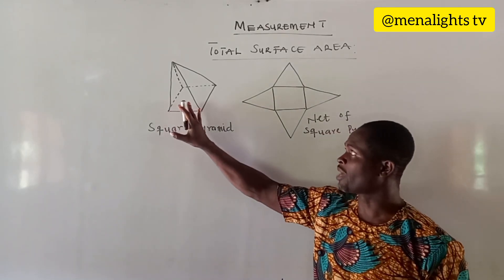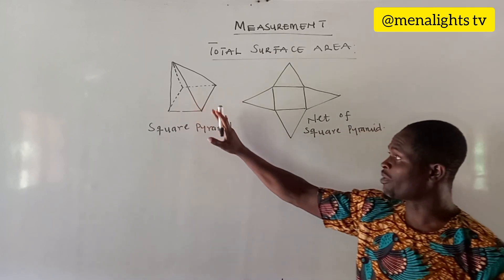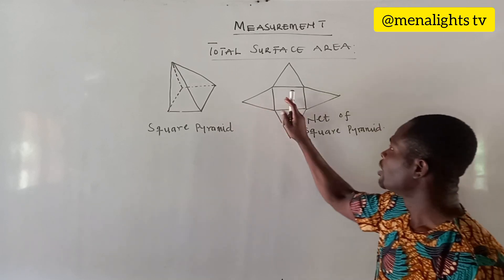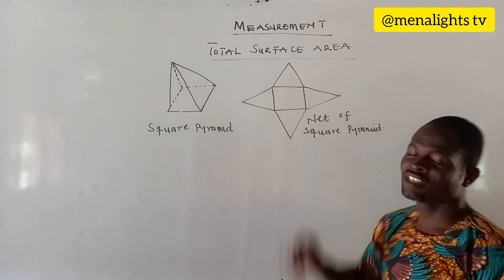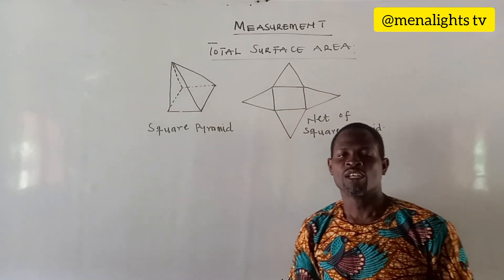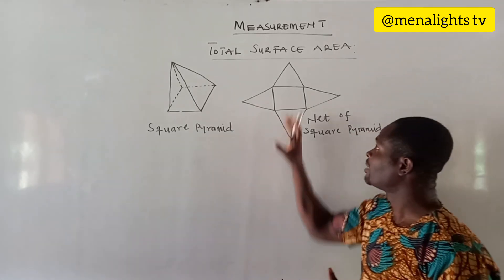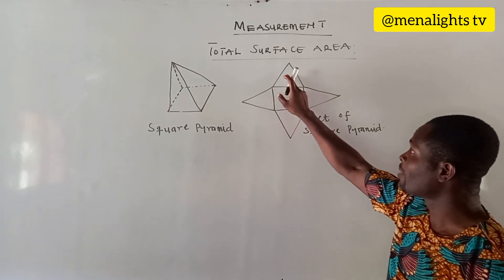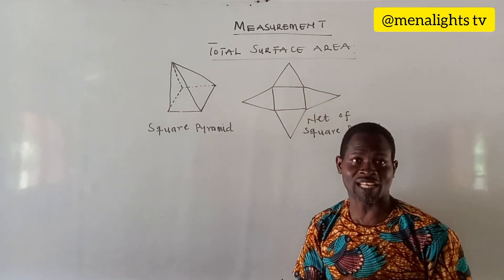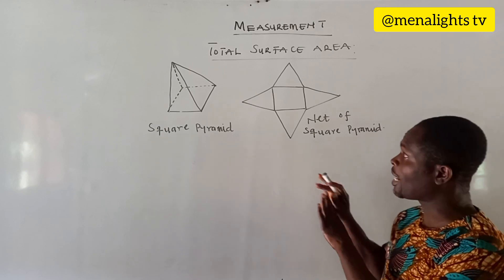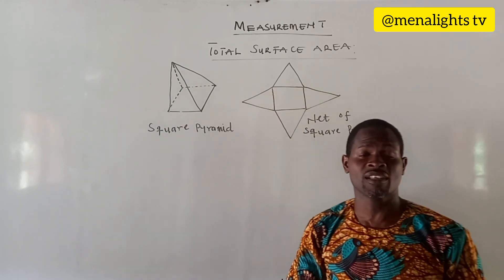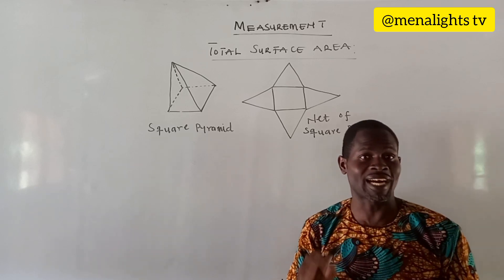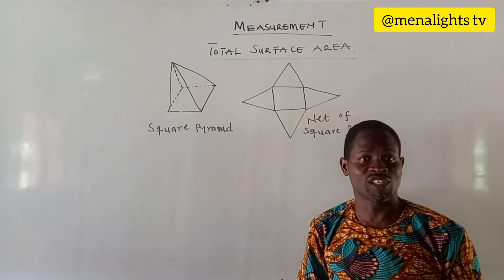This is a square pyramid, not drawn to scale, and this is the net of the square pyramid — it has a square and 4 triangles surrounding it. To find the total surface area of this net, we first find the area of the square, then find the area of the 4 triangles. To find the area of a triangle we need the height and the base, and if the height is not given we need to find it using the Pythagorean theorem.